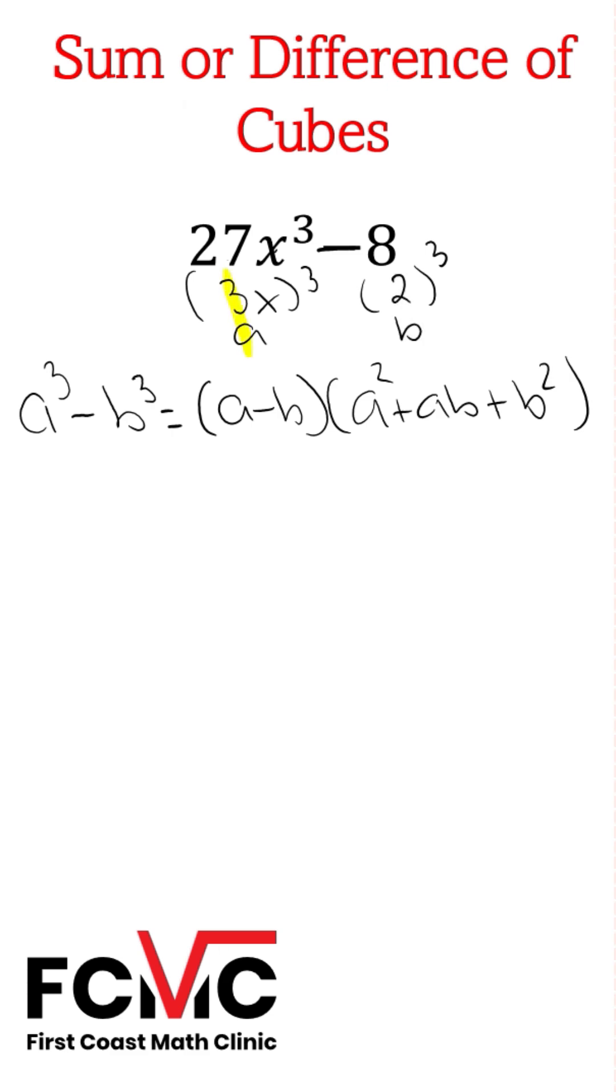So we can replace a with 3x. We can replace b with 2. So we're going to have 3x minus 2 times 3x squared plus 3x times 2 plus 2 squared.